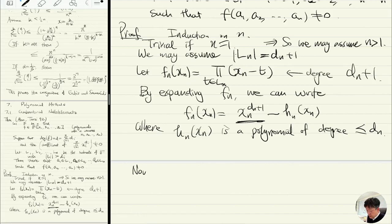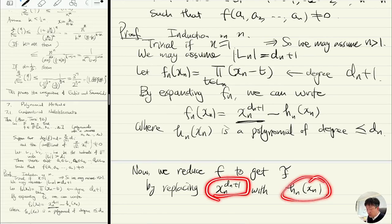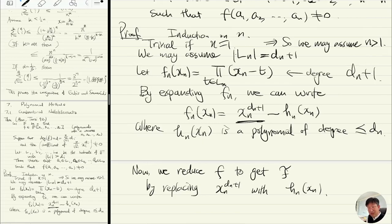Now we reduce f to get f-tilde by replacing xn to the dn+1 with hn(xn) repeatedly. This term is degree dn+1, but we're going to reduce it to a polynomial of degree at most dn. So repeatedly replace xn to the dn+1 to this lower degree polynomial. This will decrease the degree of the polynomial and degree of the monomial.